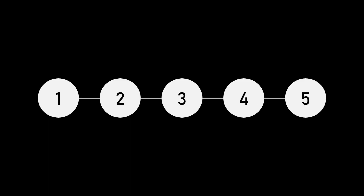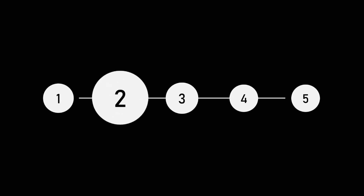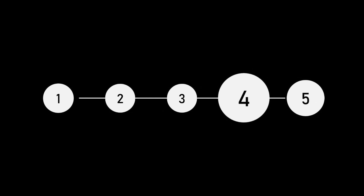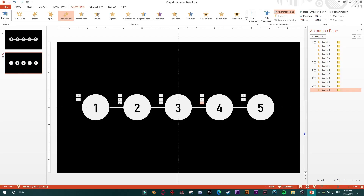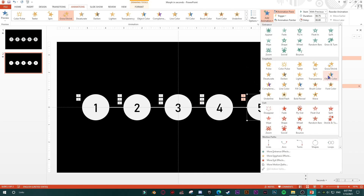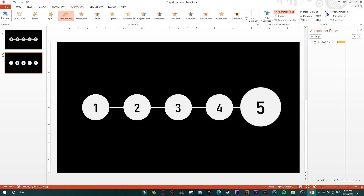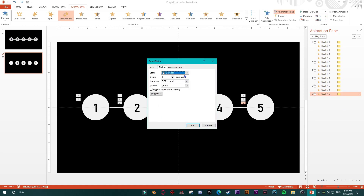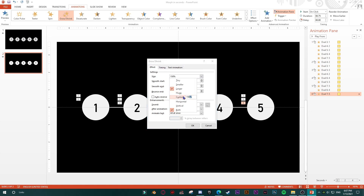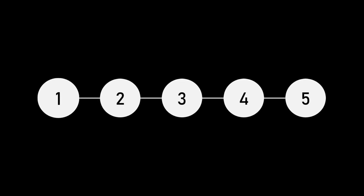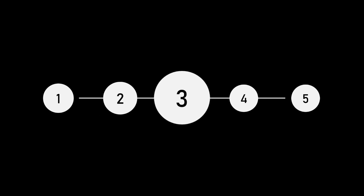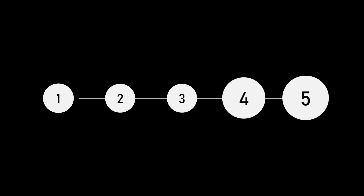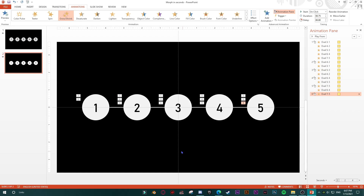To have everything aligned at the end, give the fifth shape a final animation: start on click, 0.75 seconds, shrink to 50% — so the final full slide looks balanced. Let's see — yes, it works!